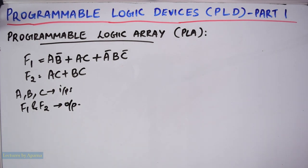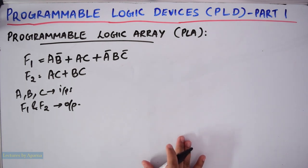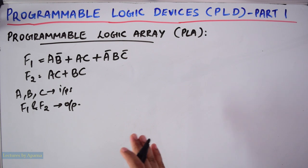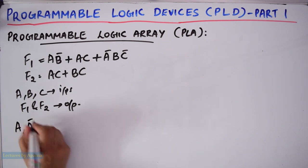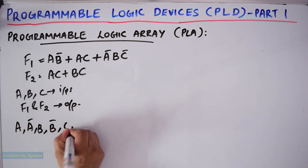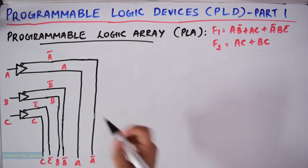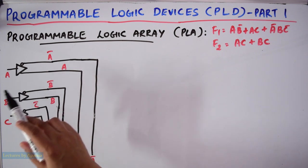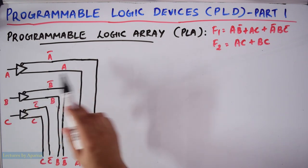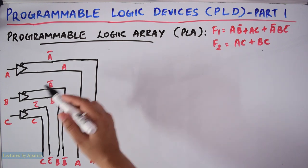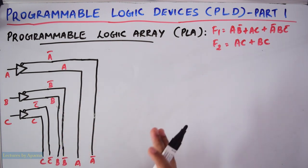This circuit is too small to be commercially available, but it is presented here to make the explanation easier. The first thing you have to do is pass the inputs A, B, C through a buffer and an inverter, so that you will get A, Ā, B, B̄, C, C̄. This symbol shows that here you get the inverted signal and here you get the original signal. Now each input and its complement have to be connected to AND gates.